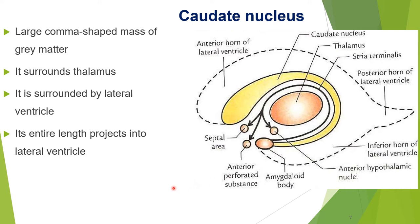The caudate nucleus is a large comma-shaped mass of gray matter — resembling the punctuation mark comma. It surrounds the thalamus and is itself surrounded by the lateral ventricle. Its entire length projects into the lateral ventricle.